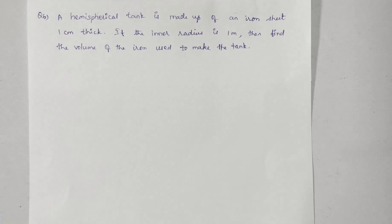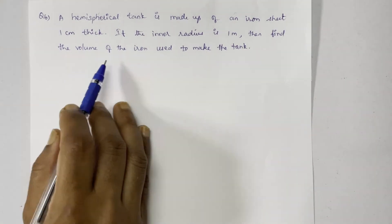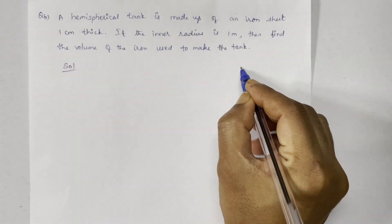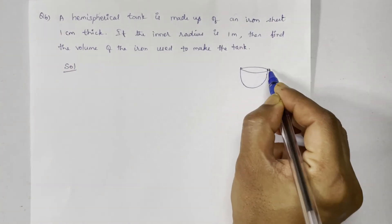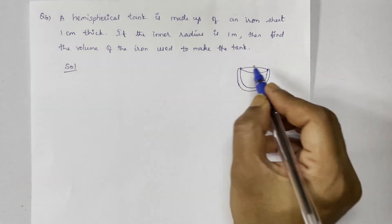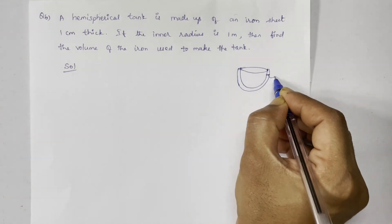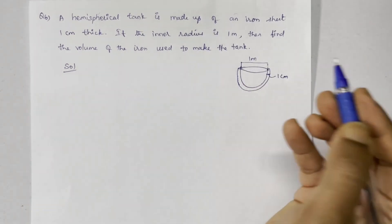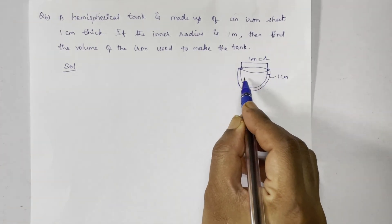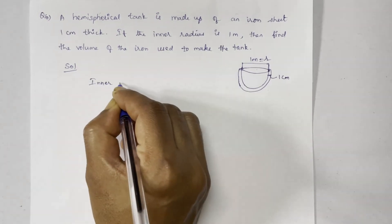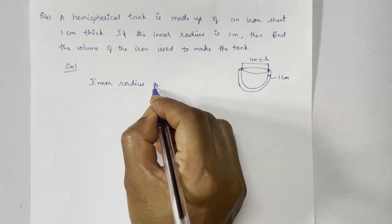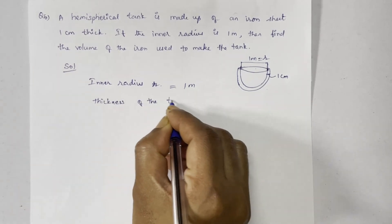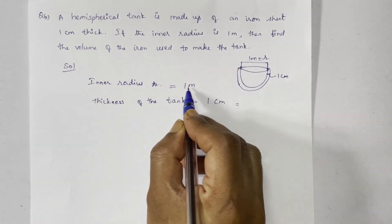A hemispherical tank is made up of an iron sheet one centimeter thick. If the inner radius is one meter, find the volume of the iron used to make the tank. The inner radius, small r, is equal to one meter. The thickness of the tank is one centimeter.